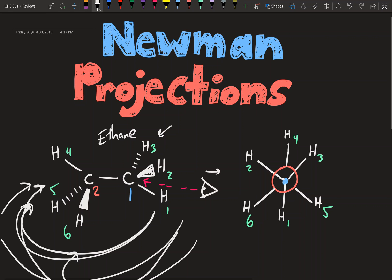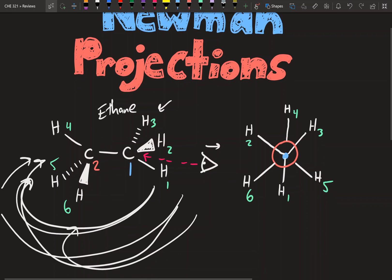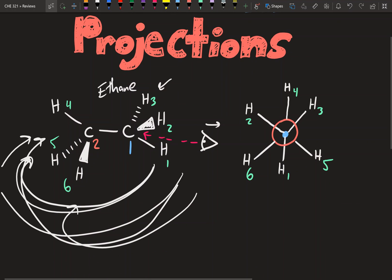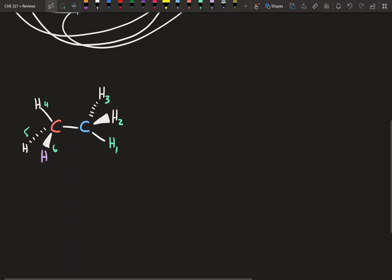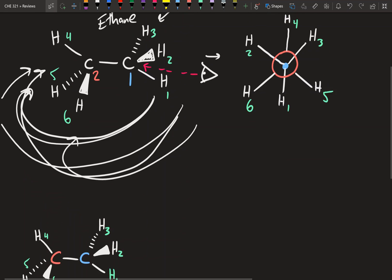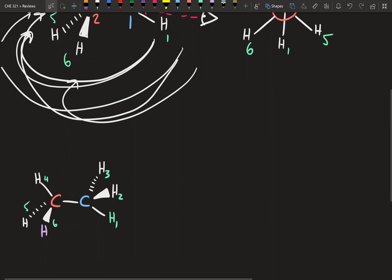Hey guys, welcome to the second video on Newman projections. This one's going to be all about how we rotate the bonds in Newman projections to show molecules in a different conformation. If you watched the last video, you'd see that we left off showing the general idea of how you can draw a Newman structure based on a given compound. Today we're going to go through a little bit of that again and also how we can rotate them.